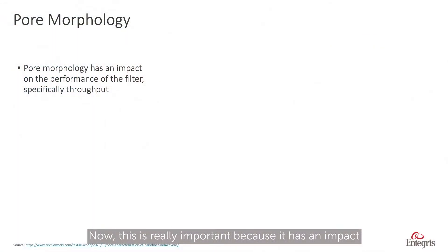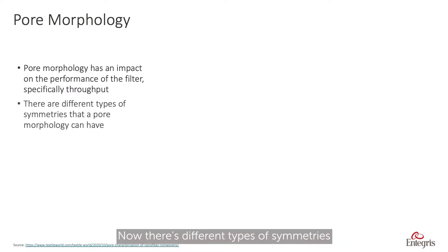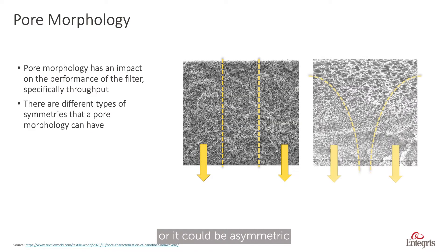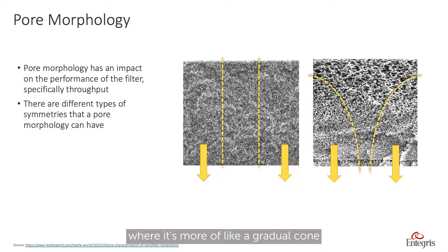Pore morphology is essentially the nature and structure of the pore within a membrane. This is really important because it has an impact on the performance of the filter, specifically throughput. There are different types of symmetries that a pore morphology can have. It could be symmetric, where it's very uniform, or it could be asymmetric, where it's more of a gradual cone that allows for gradual plugging.